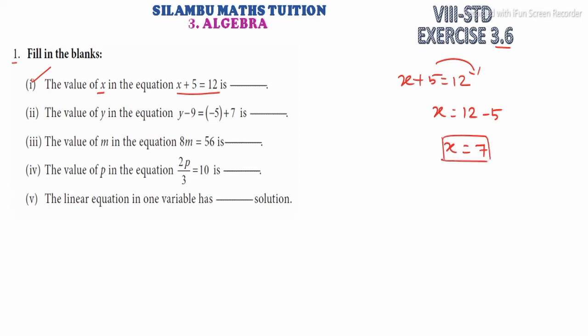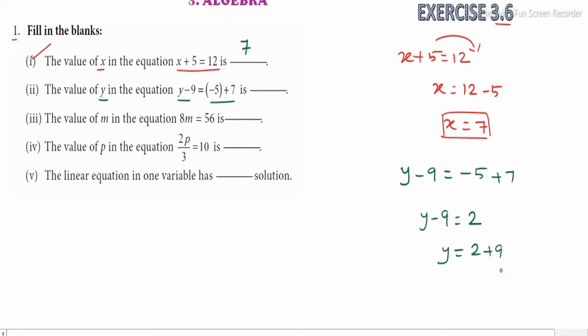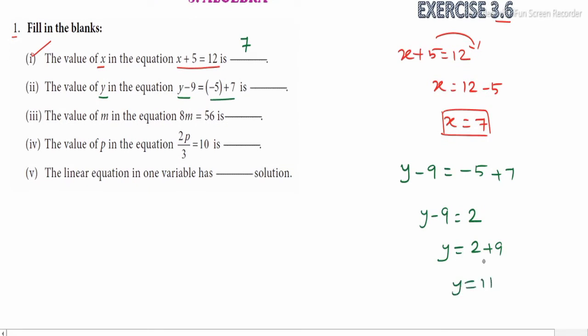Find the value of y in the equation y minus 9 equals minus 5 plus 7. So y minus 9 equals minus 5 plus 7. Anyway, y minus 9 equals, the different signs so subtract, we get 2. Y value, y required, so the minus 9 goes to right side and changes to plus. So 2 plus 9 we get 11. So y is equal to 11. In this place we get y's value is 11.